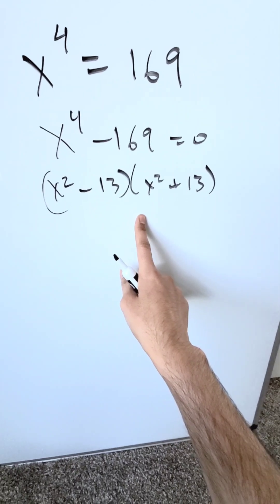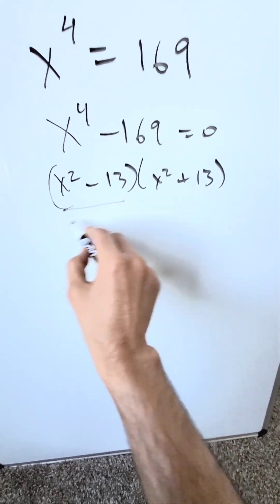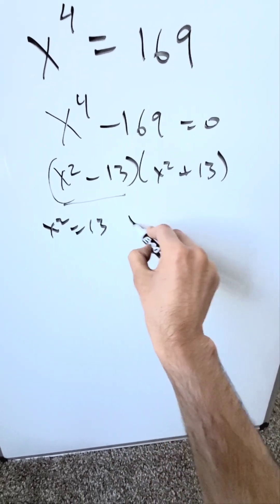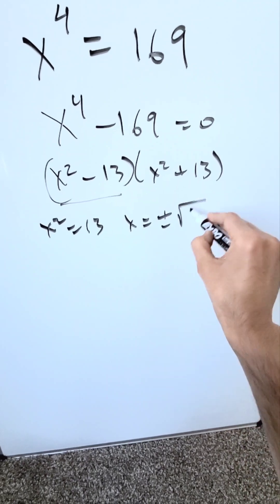Now you'll independently determine the factors. From here, you're looking at x squared is equal to 13 and x is equal to plus and minus square root of 13.